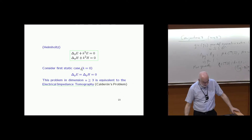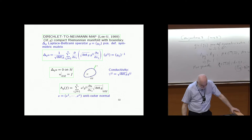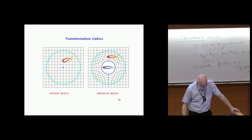The geometry plays a role and the coefficients are of this form. Helmholtz equation, and then the static case — harmonic functions — is Calderón's problem. I'm not going to repeat all of this since we already had several lectures on it. The transformation optics idea is this: I want to explain it.